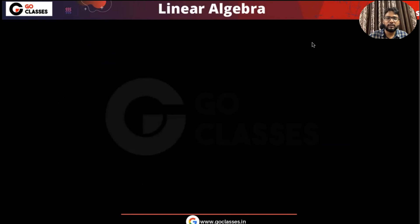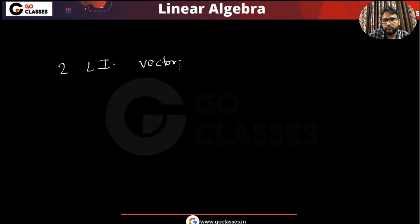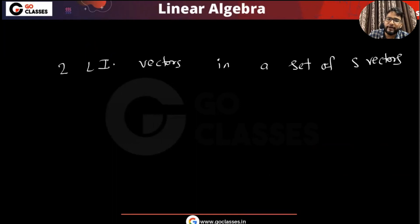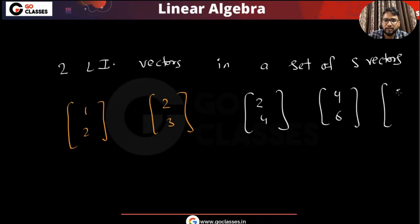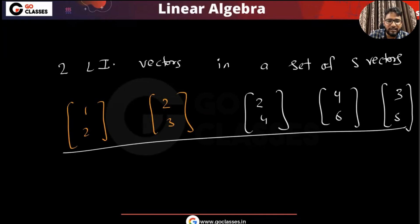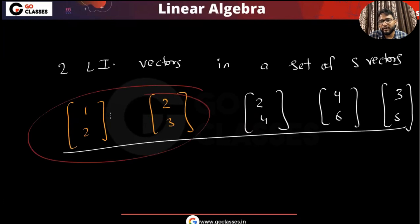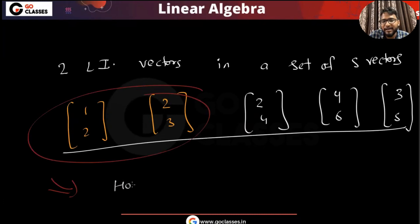Now let me ask you another question. Suppose you have two linearly independent vectors in a set of five vectors — every other vector is just redundant, linearly dependent on those two. For example: [1,2], [2,3], and then others like [2,4], [4,6], [3,5] — all dependent on the first two. Now if I do any kind of linear combination of all five vectors, how many linearly independent vectors can I get?